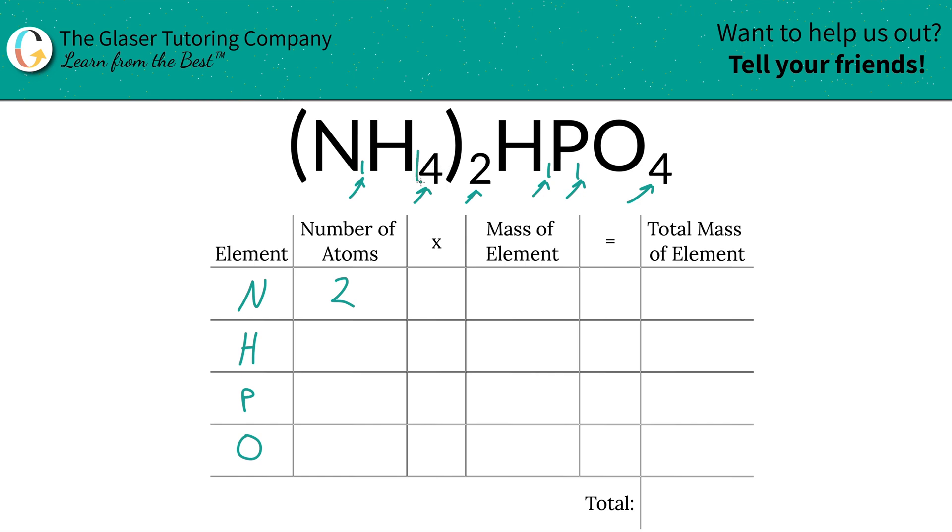Hydrogen now is the same thing. You've got the inner subscript of four, outer subscript of two. So there's eight hydrogens in total here, but don't forget, there's also another hydrogen over here, and there's one, so that means you have a total of nine. You also therefore have one phosphorus, that one's nice and easy, and you have four oxygen.